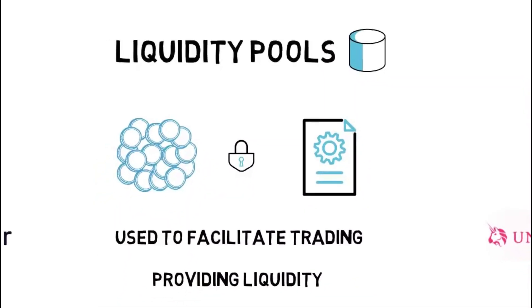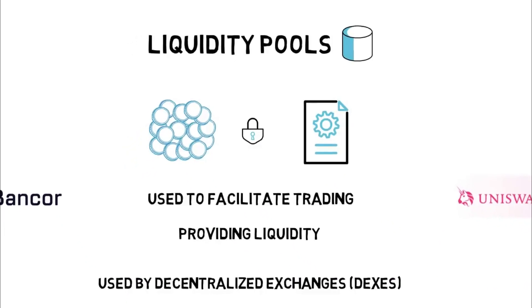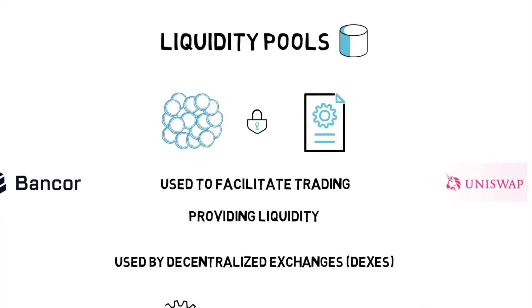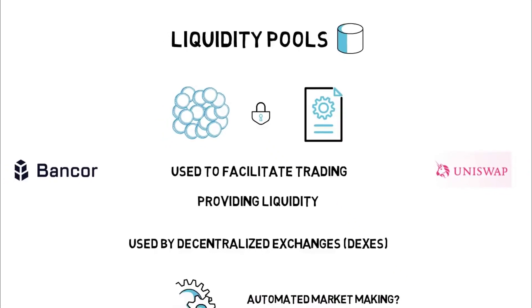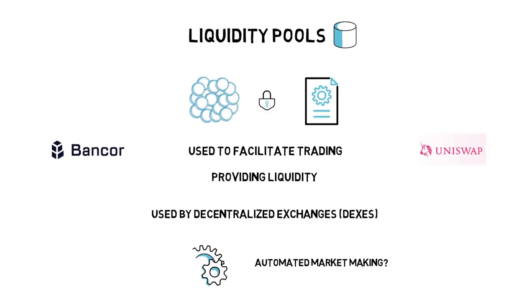Utilizing liquidity pools and an Automated Market Maker, or AMM, Uniswap provides instantaneous Bitcoin exchanges. AAVE, Curve, Sushiswap, and Balancer are also well-known exchanges that utilize liquidity pools.